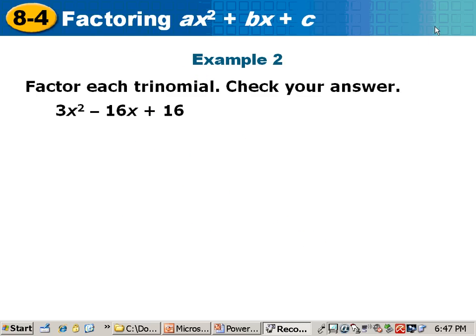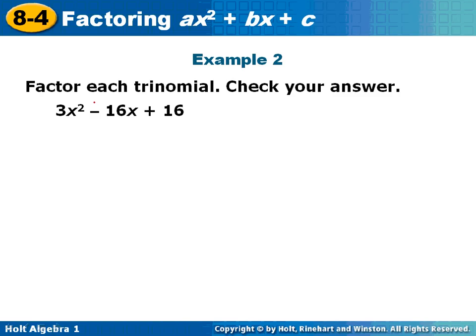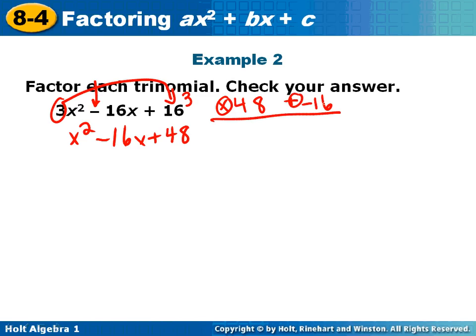All right, write down number 2. This one's a little bit different: 3x squared minus 16x plus 48. Now, I need to think of the things that multiply to give me 48 and add to give me a negative 16. How am I going to multiply to get a positive and add to give me a negative? Well, both of these numbers are going to have to be negative.